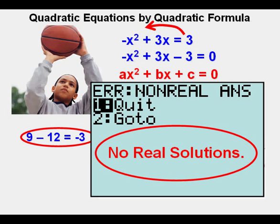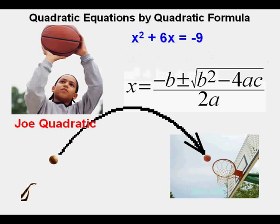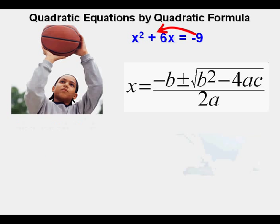Joe will look at this quadratic equation, x squared plus 6x equals negative 9. Just like solving by graphing or by factoring, the first step is to get one side equals 0. He moves the negative 9 to the left of the equal sign where it becomes positive 9. So now he has x squared plus 6x plus 9 equals 0.